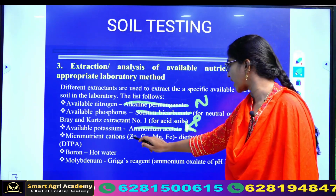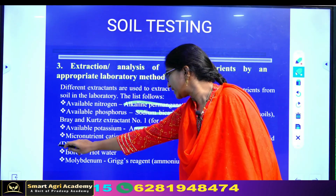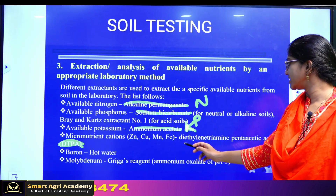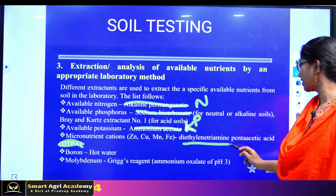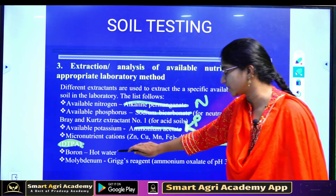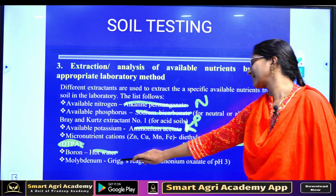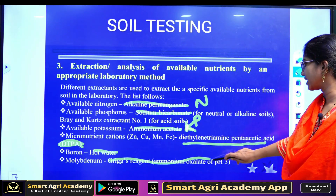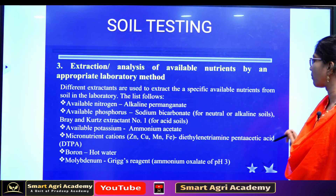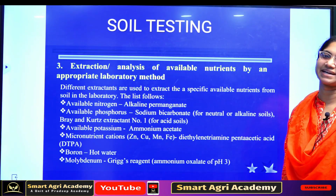For micronutrient cations like zinc, we use DTPA — Diethylene Triamine Pentaacetic Acid. Boron is extracted using hot water. For molybdenum, we use Grigg's reagent. And ammonium oxalate at pH 3 is also used. These are the different extractants for nitrogen, phosphorus, potassium, and micronutrients.